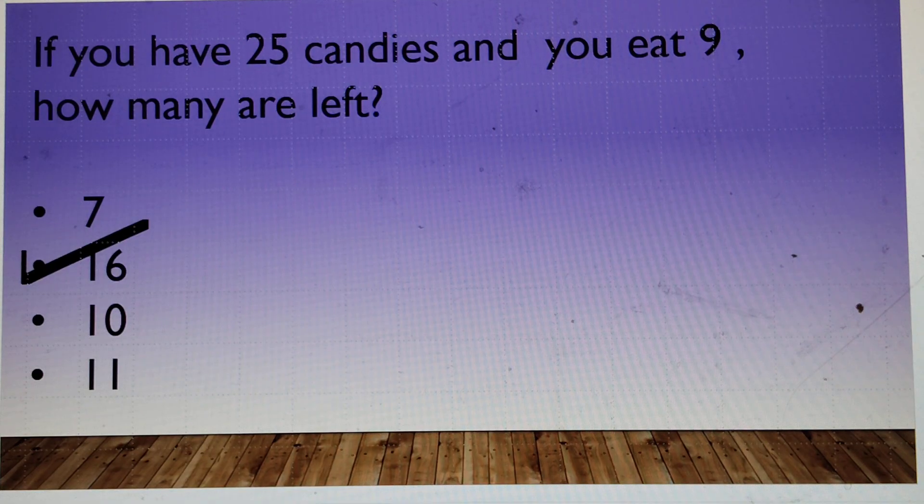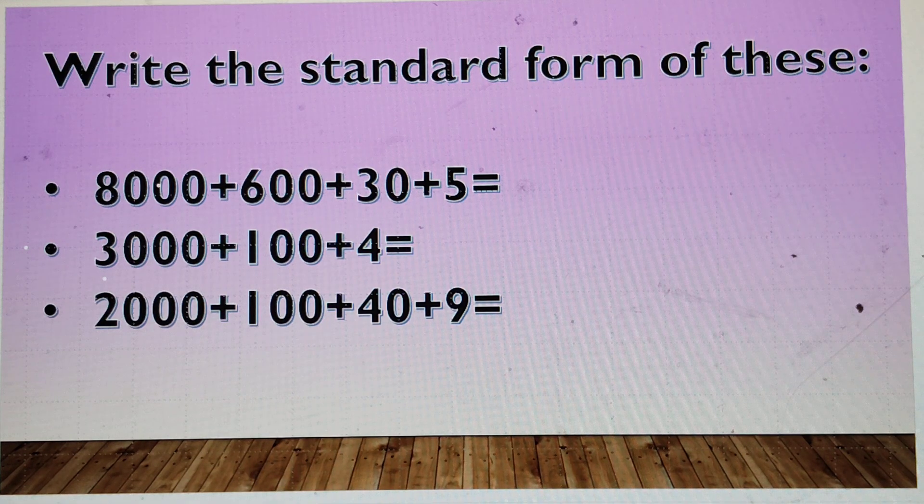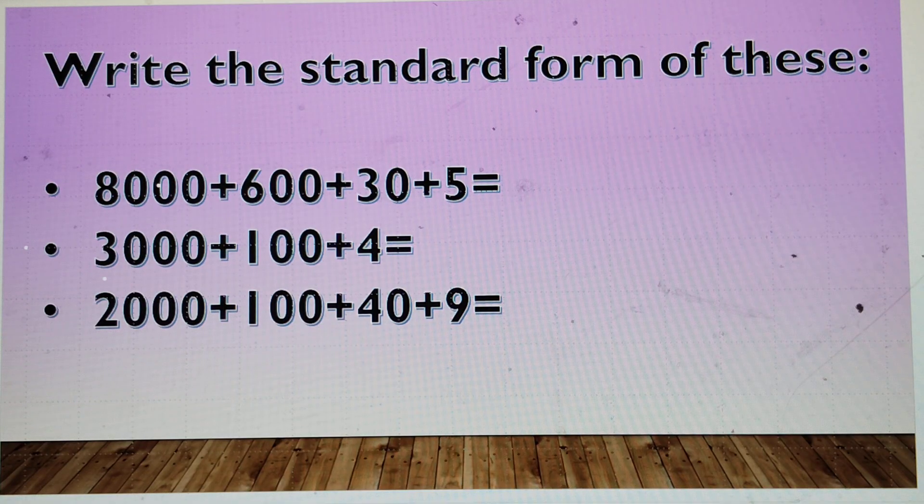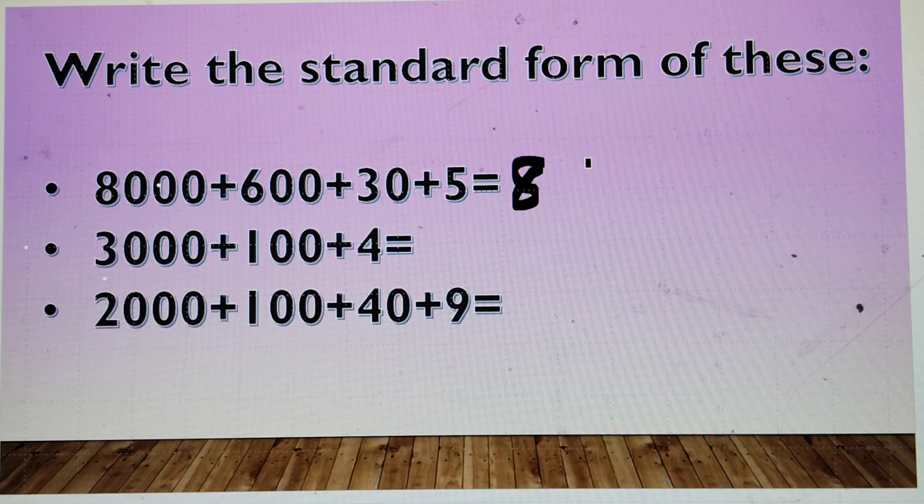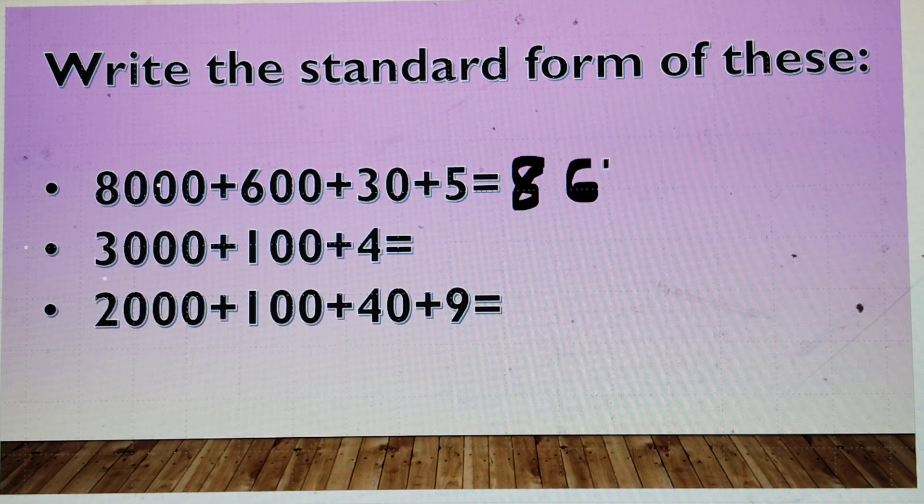Let's see if you can answer this question. Write the standard form of this. 8,000 add 600, add 30, add 5. 8,635. Yes, it's 8,635.